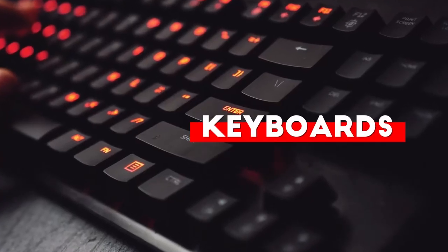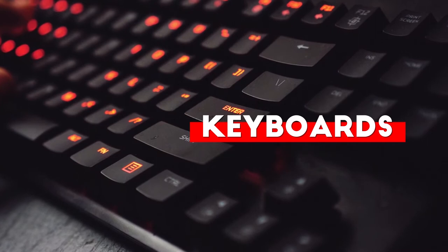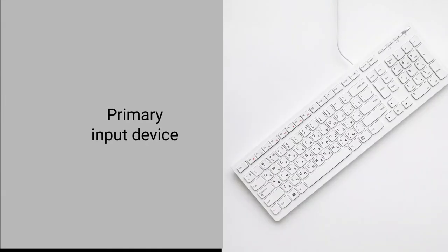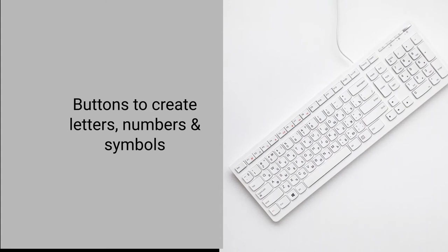The first device is the keyboard. This is probably one thing that we generally use most often with our computer devices. It is a primary input device where we have buttons which create letters, numbers and symbols. It is about the user interface given to the user, but the system needs to understand that in a different format. These keyboards contain different alphabets, digits, and special characters which are mapped to binary digits for processing.